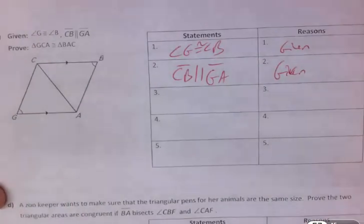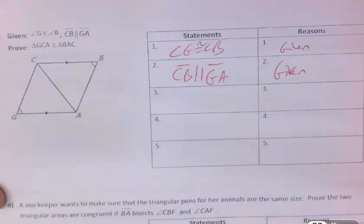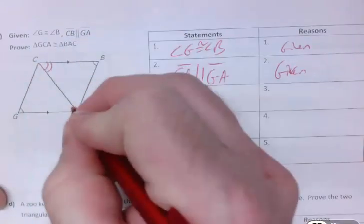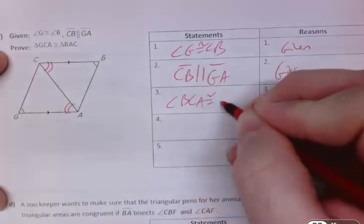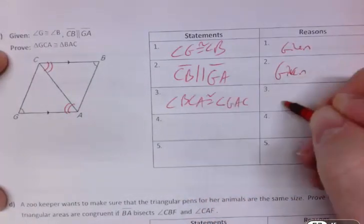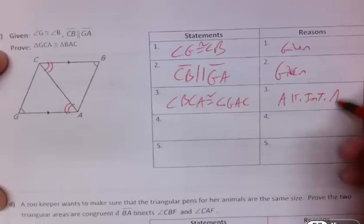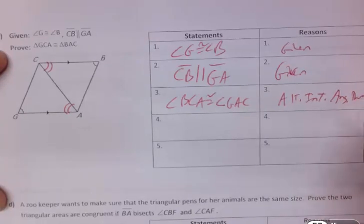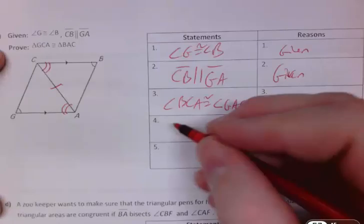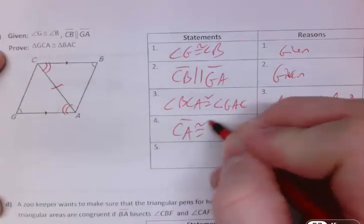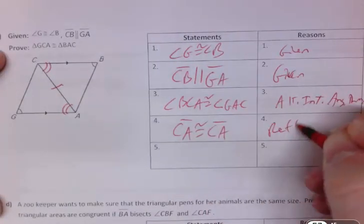There must be other information. And if you followed what we did in the one before, it's very similar. Because this time you also have alternate interior angles. Angle BCA congruent to angle GAC. Again, alternate interior angles theorem.